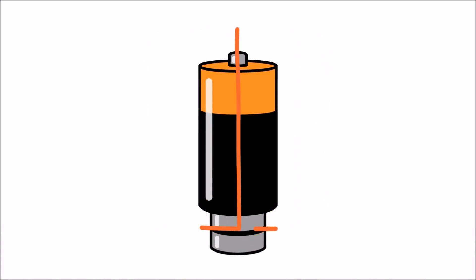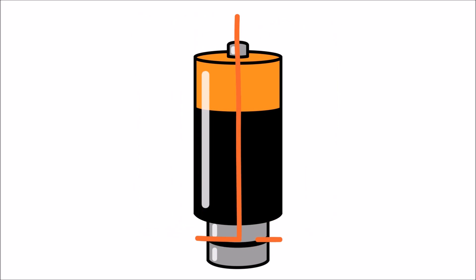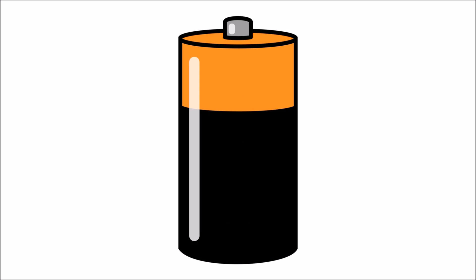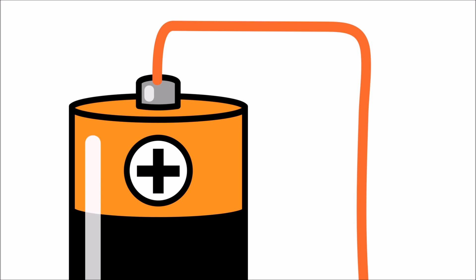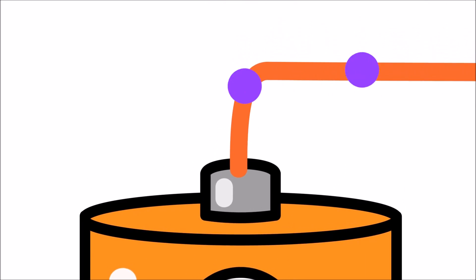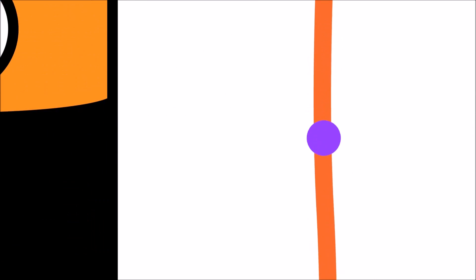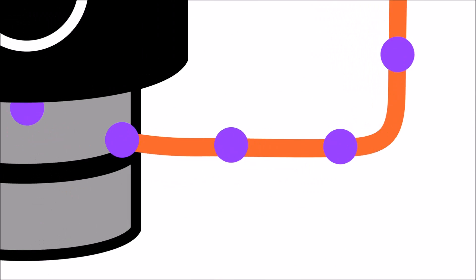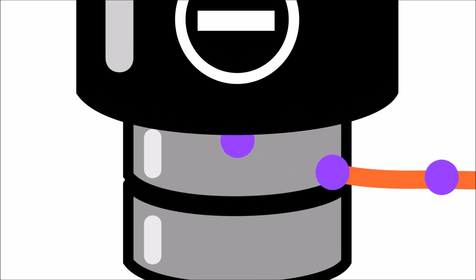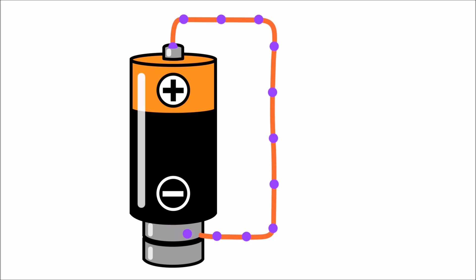A homopolar motor is the most basic example of an electric motor. Batteries have a positive end and a negative end. In our experiment, current flows out of the positive end of the battery, along the copper wire, into the magnets, and back into the negative end of the battery, completing the circuit.